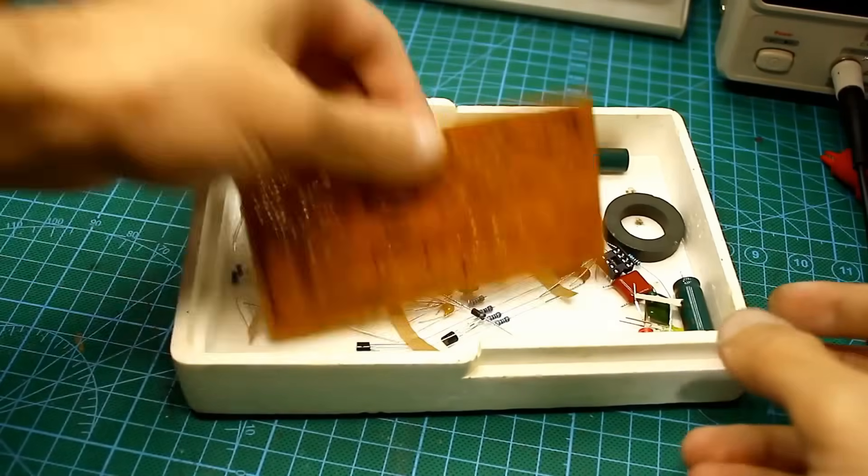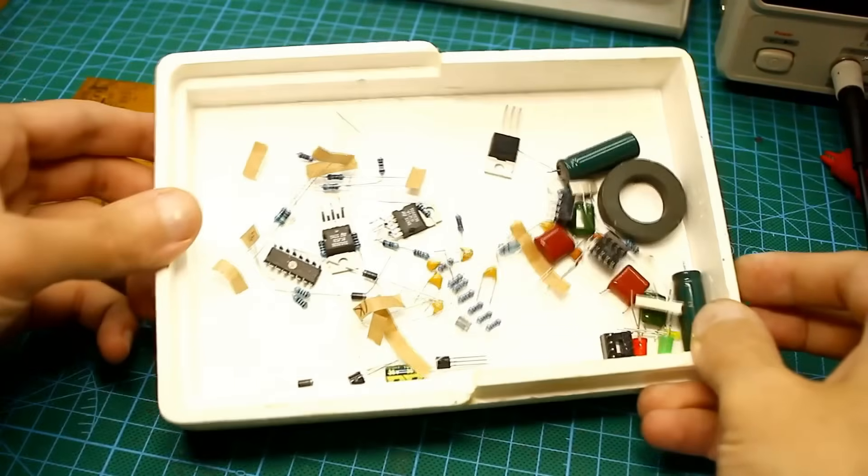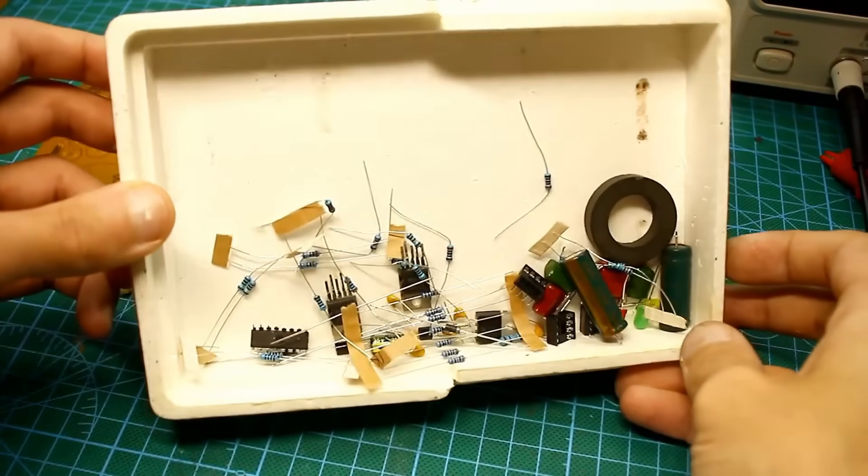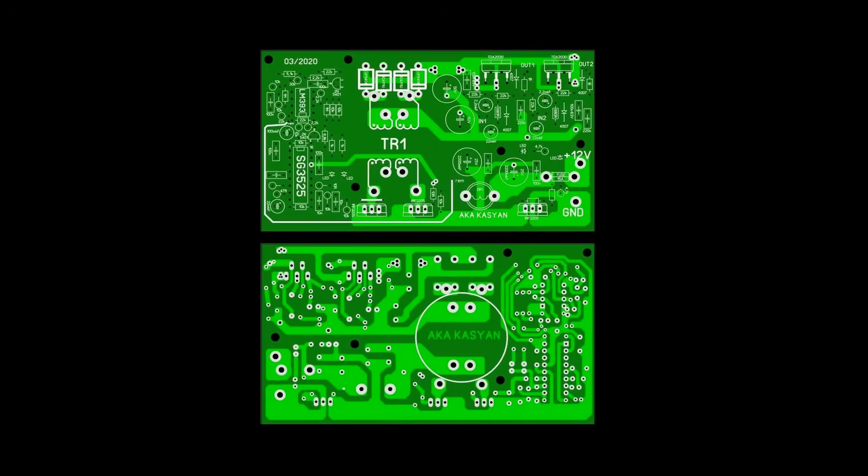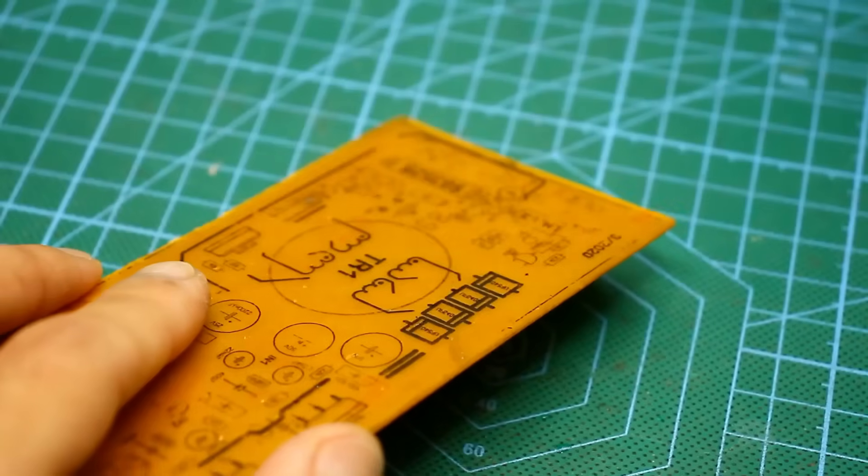In the description of this video, there is a link to the project archive where you will find everything you need. Files for the printed circuit board for both home LUT technology and a folder with the Gerber archive for ordering boards from a factory. In addition, there is a word document with a list of components.